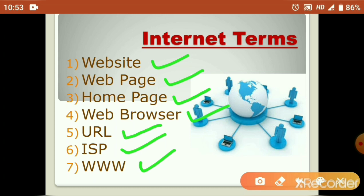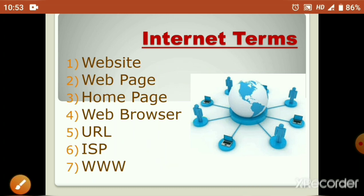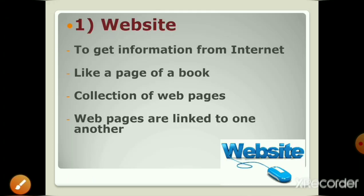Let's get more information about these terms one by one. Our first term is website. The information that we can get from internet is in the form of website and web page. As a book contains a number of pages, similarly, a website is a collection of related web pages which are linked to one another.